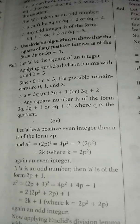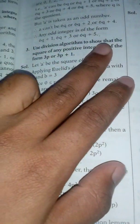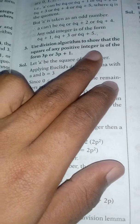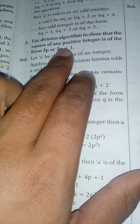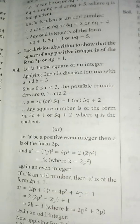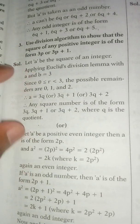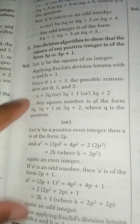Our third question asks: Use division algorithm to show that the square of any positive integer is of the form 3p or 3p+1. That's the question and that is the answer. In this question there are two answers. You can see it's a very short answer.